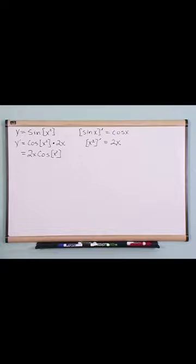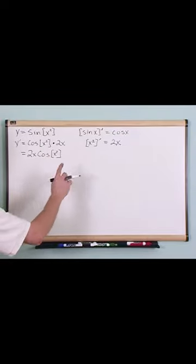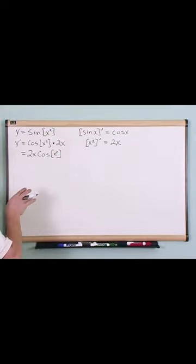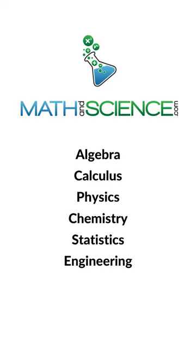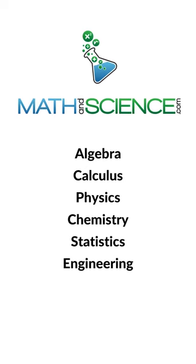But in essence, what you're doing with the chain rule is you take the derivative of the big picture, which is the sine of x squared. What you do is you keep multiplying by derivatives of the inside.